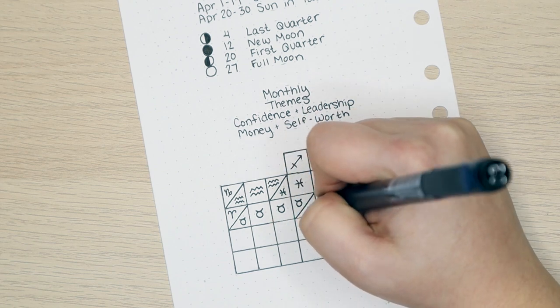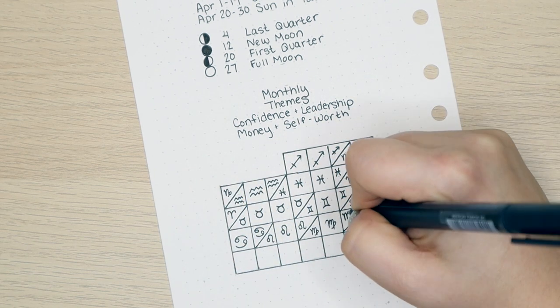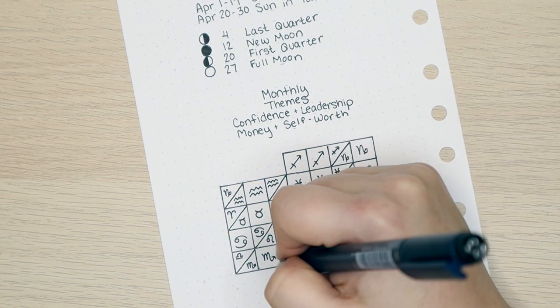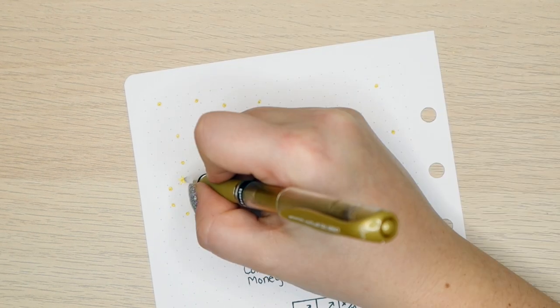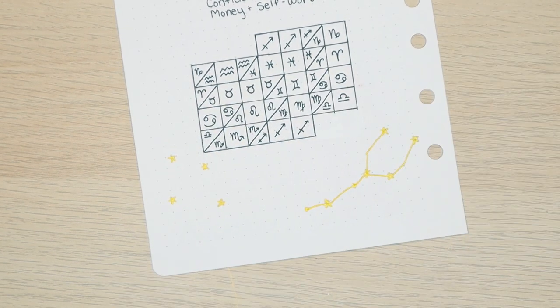But what I did instead was I drew the constellation for Pisces, my mistake, and Taurus. It should have been Aries and Taurus, but at least I got my own sun sign right. So there's that.